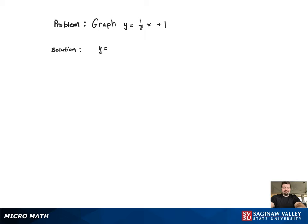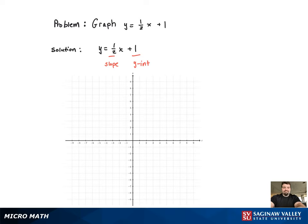One thing to notice about this problem is that the equation is already in slope-intercept form. That means if we just identify that 1 is the y-intercept and 1 half is the slope, we're already good to graph.